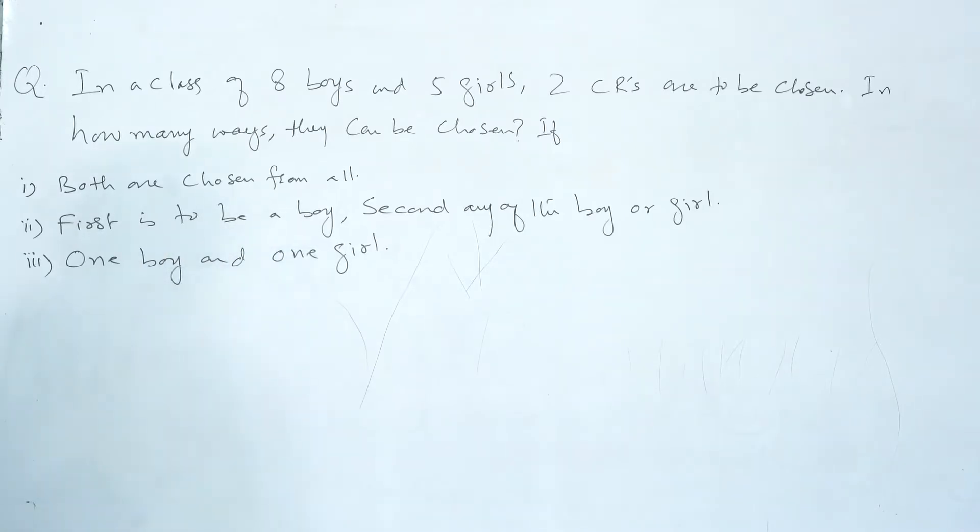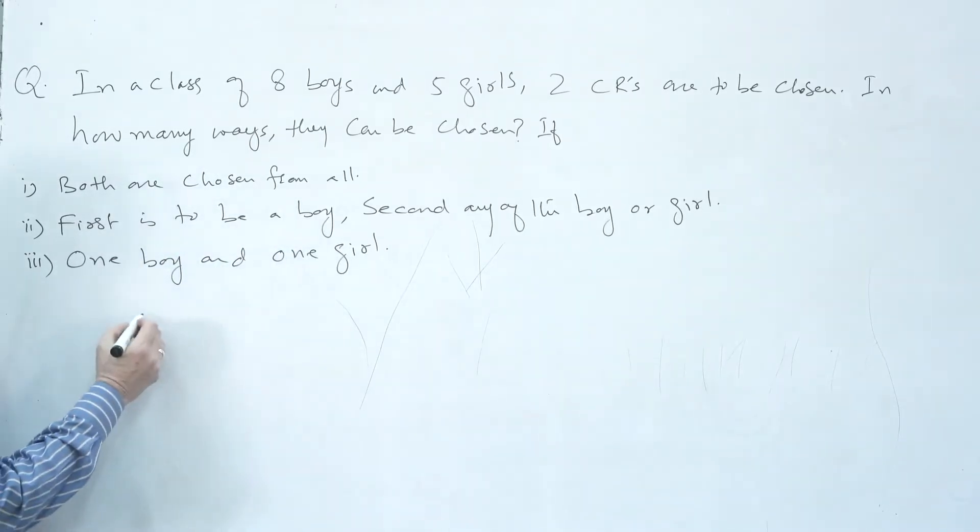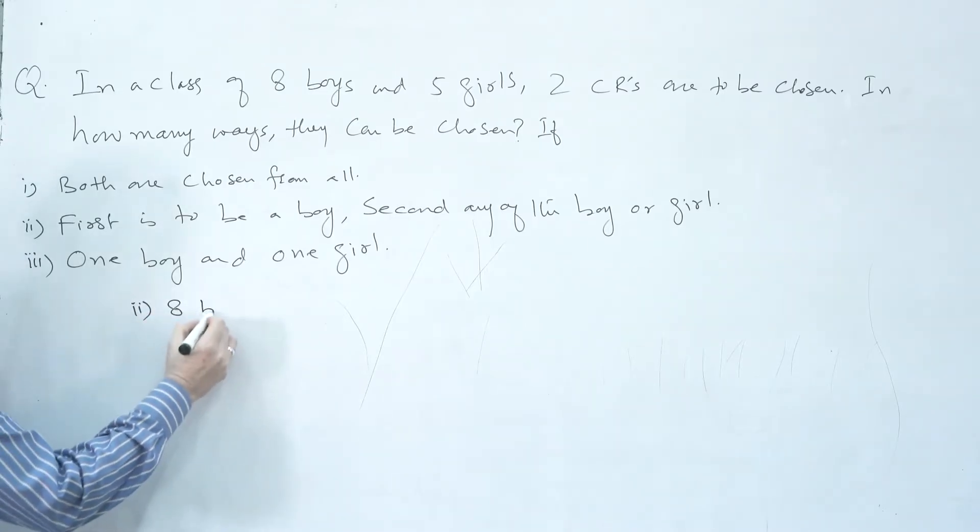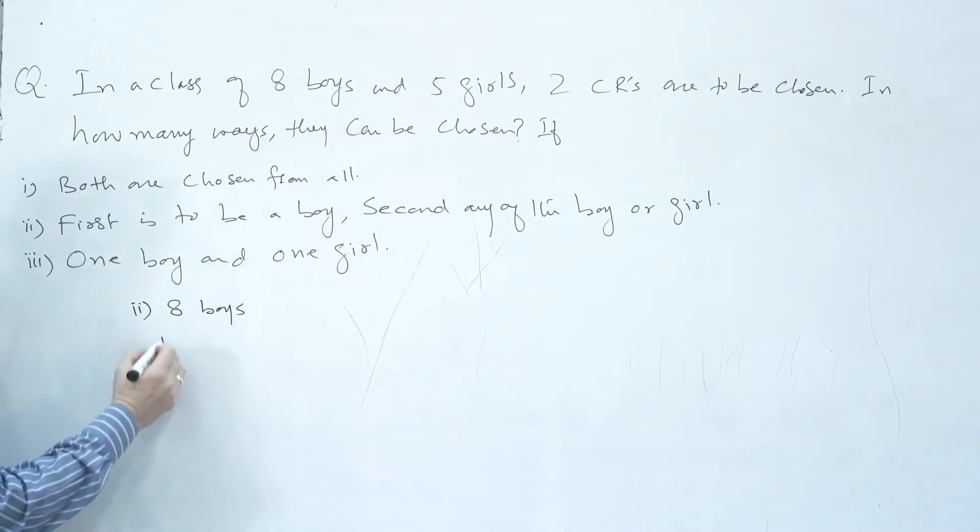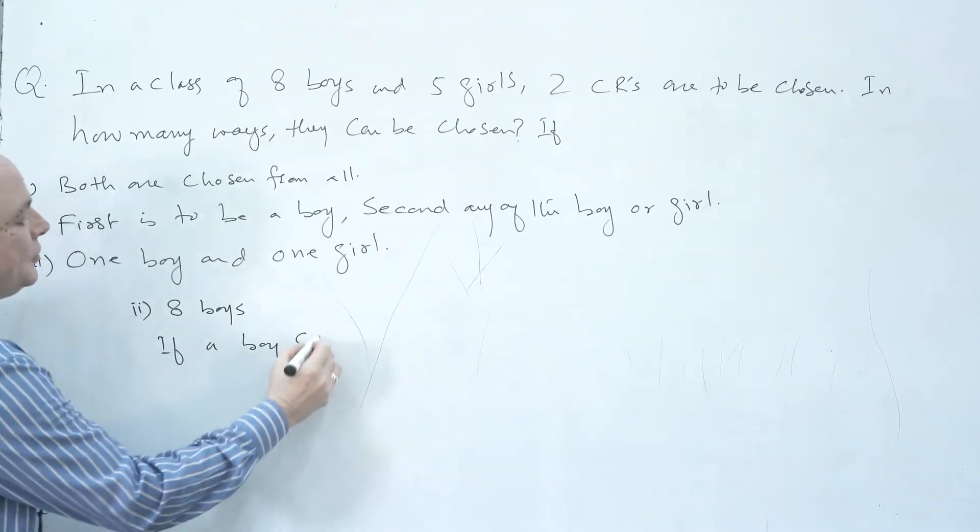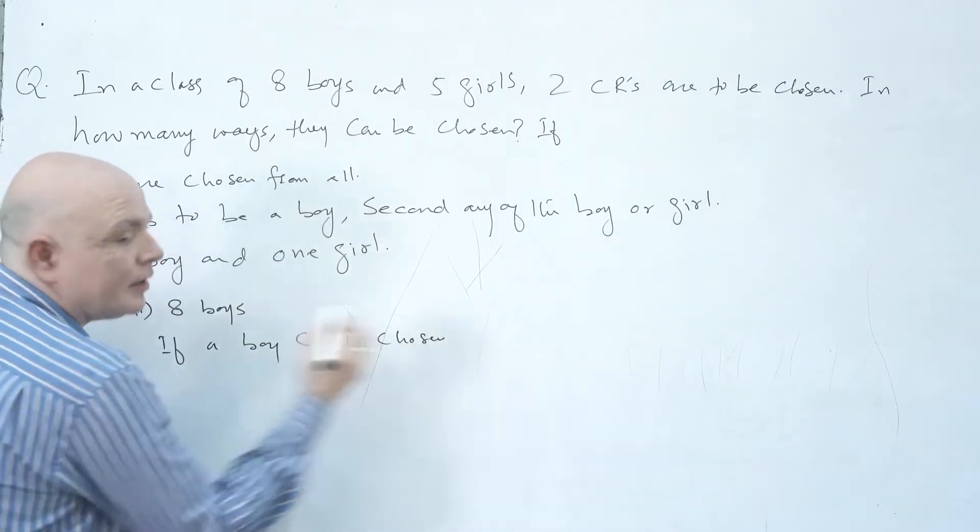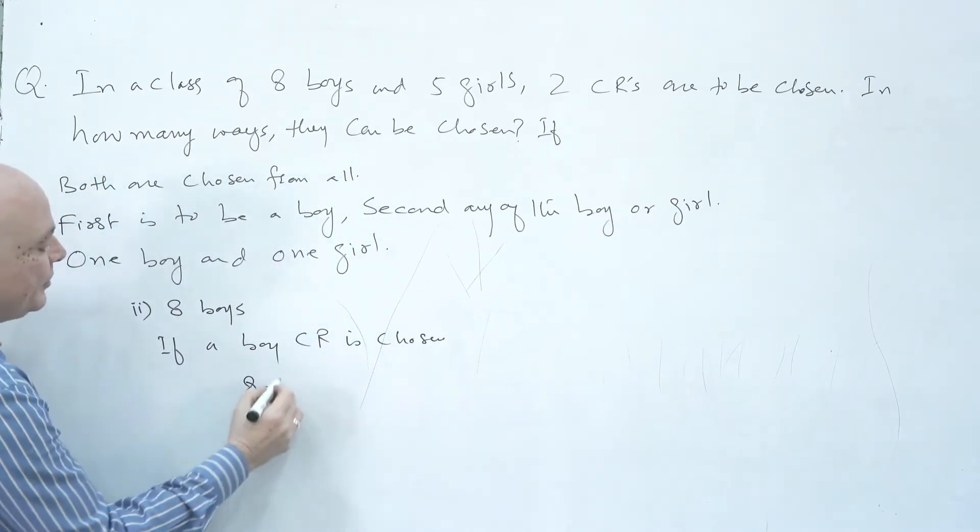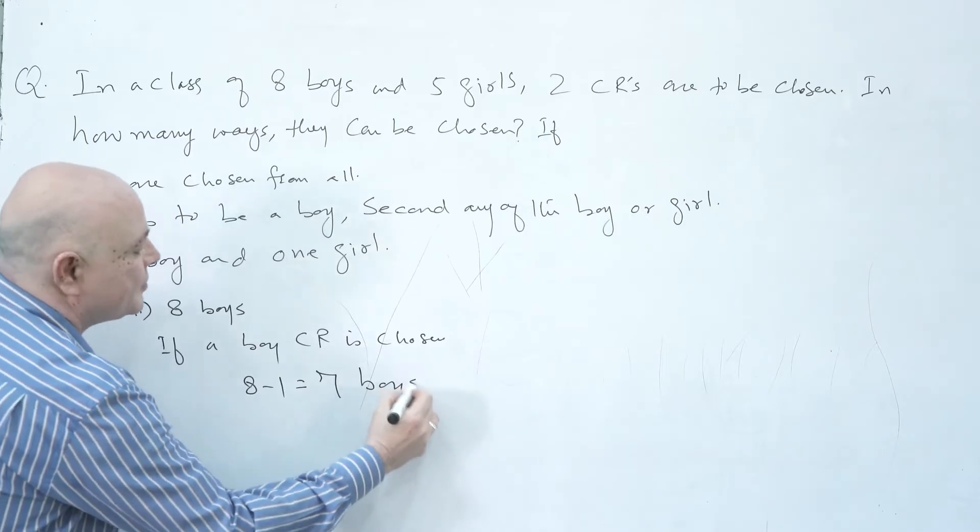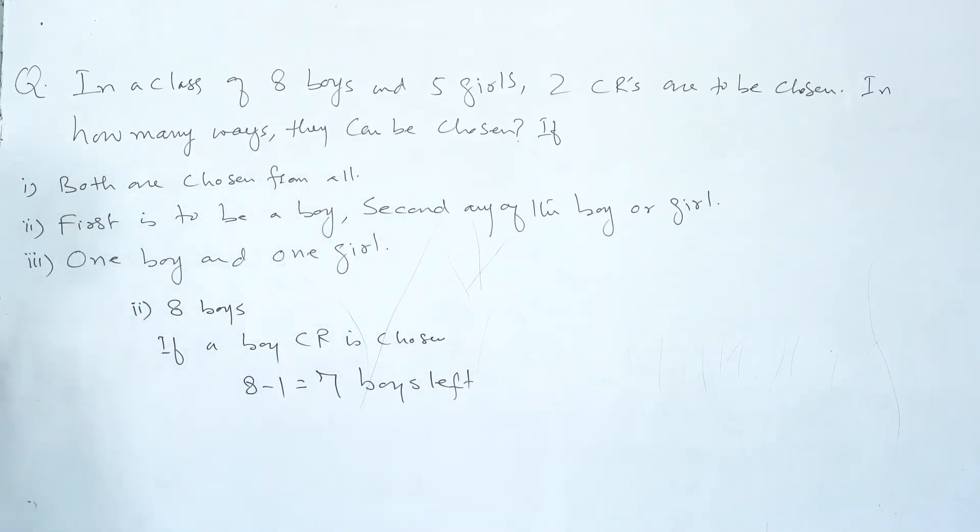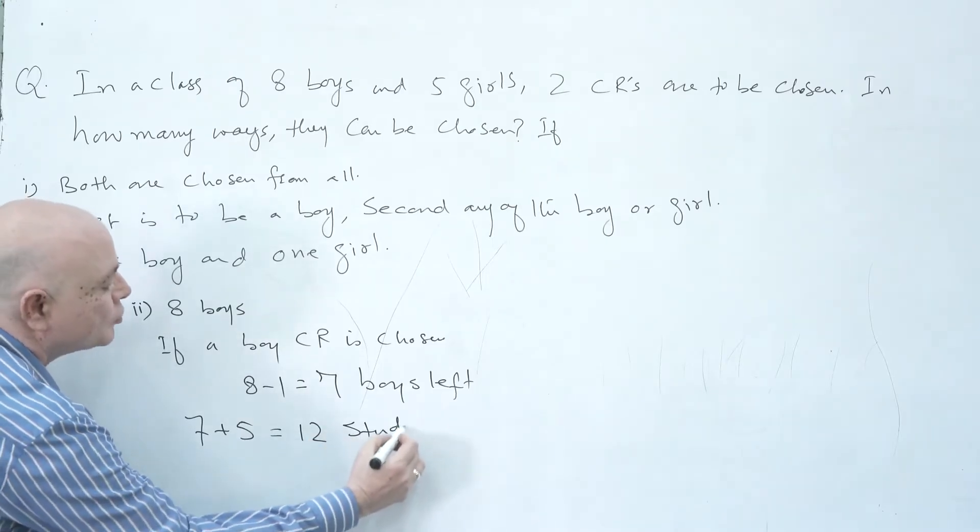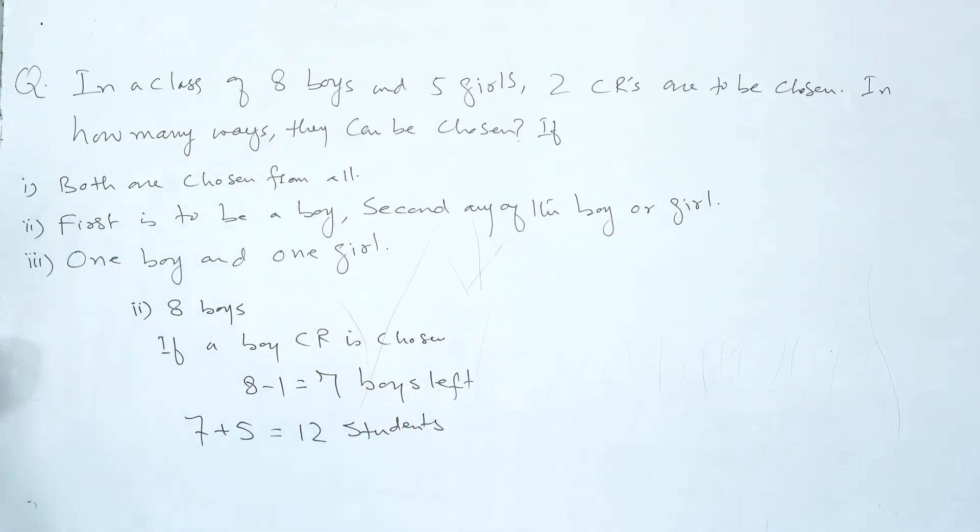For second and third there is no issue. So I am solving first one in the last with a reason and a proof. Then I will focus on your permutation and combination difference. First is to be a boy.